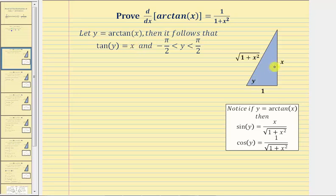Using this triangle, we can also say that sine y would be equal to the ratio of the opposite side to the hypotenuse, or x divided by the square root of the quantity one plus x squared. We can also say that cosine y equals the ratio of the adjacent side to the hypotenuse, which is one divided by the square root of the quantity one plus x squared.